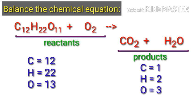If we look at this equation, we can see that the equation is not balanced. In the reactants side, there are 12 carbon atoms, 22 hydrogen atoms and 13 oxygen atoms.